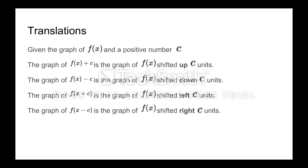First we'll do translations — that's moving a graph left, right, up, or down. So say we're given a function f that we already know. If we don't know this graph, then we can't do any of this. So we already know some graph, and somebody gives us one of these: they give us our original function plus some positive number c. Then that's going to take the original graph and shift it up by c units.